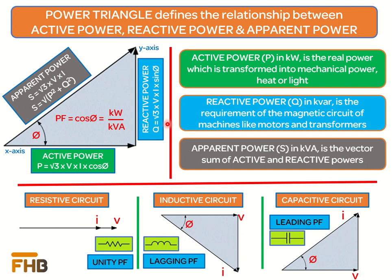The apparent power, which is measured in volt-amperes or kilovolt-amperes, is the combination of active power and reactive power. In the phasor representation, the power factor is the cosine of the angle by which the current either lags or leads the system voltage, and is the ratio between the active power and the apparent power. The value of power factor is an indication of how efficiently electrical power is being consumed in the circuit.